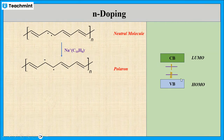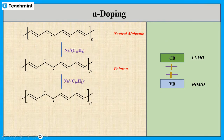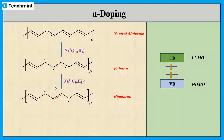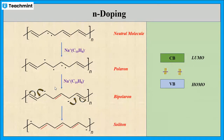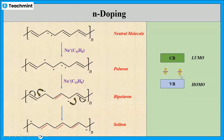In the polaron state, a negative charge as well as a radical will be present with high energy. Further doping with sodium naphthalide results in the formation of a di-anion called a bipolaron. On delocalization in both sides, this results in the formation of a soliton. Here, both negative charges are delocalized, which forms an intermediate band between the conduction band and the valence band that enables the flow of electrons.